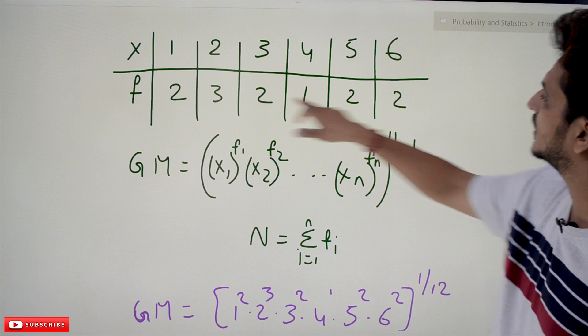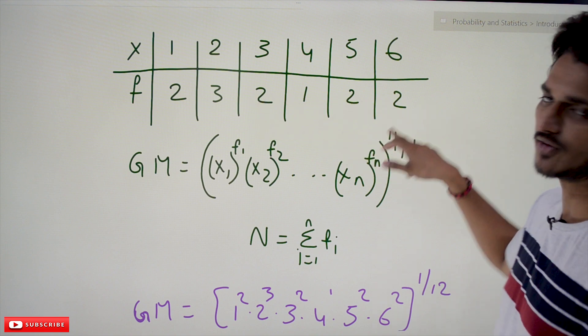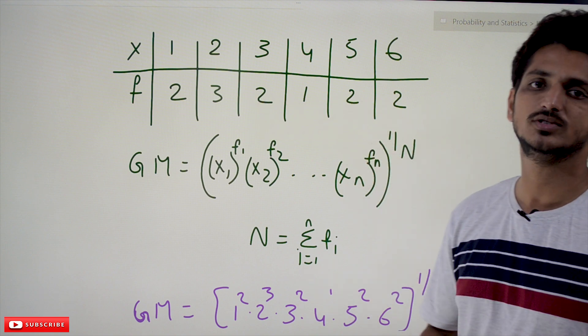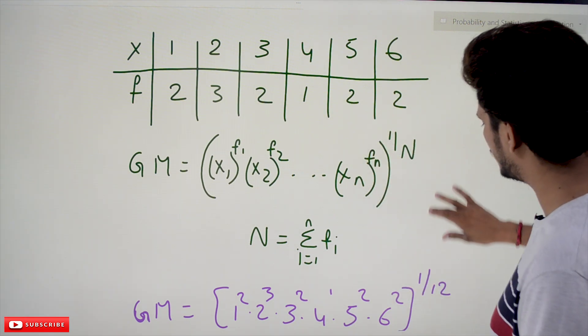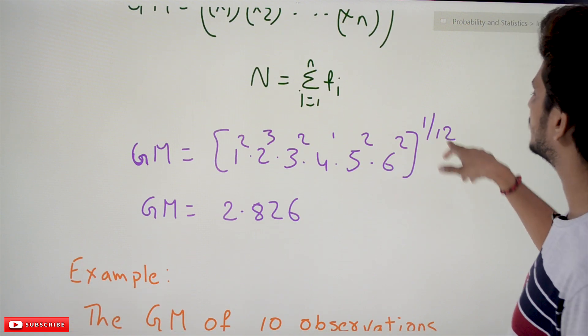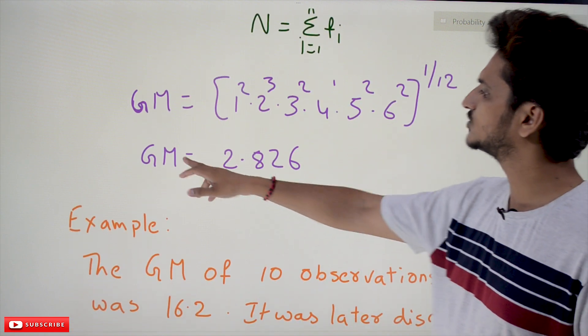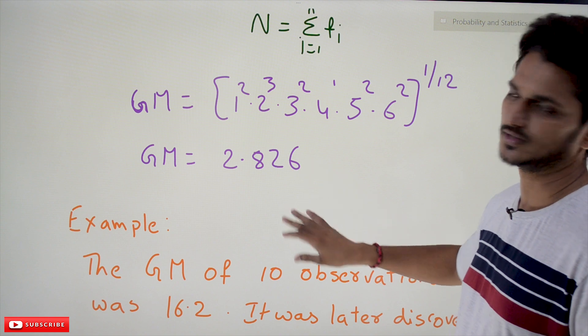The summation of all the frequencies is 12, so the power is 1/12. If you calculate this, the geometric mean is 2.826.